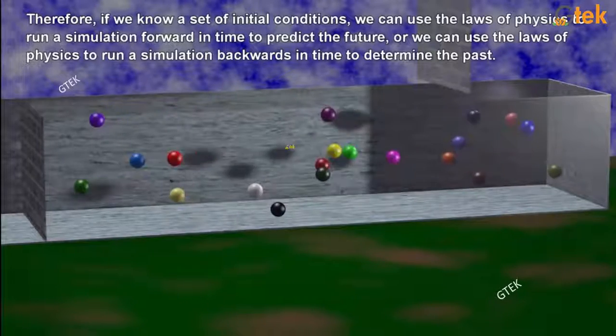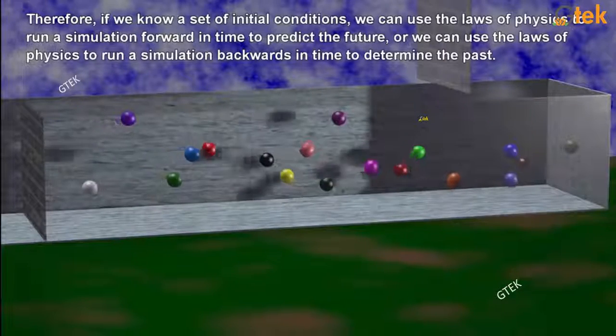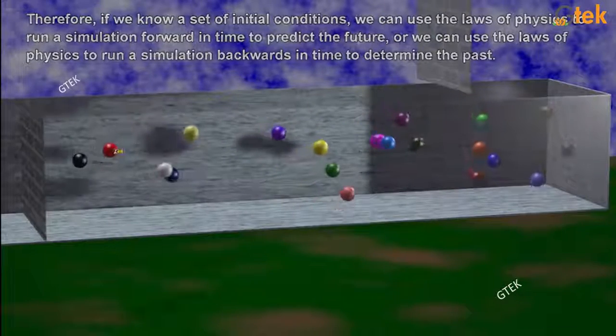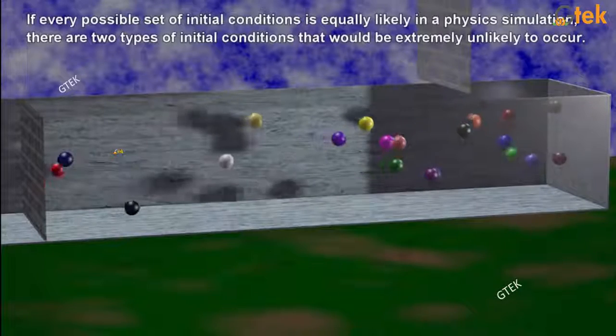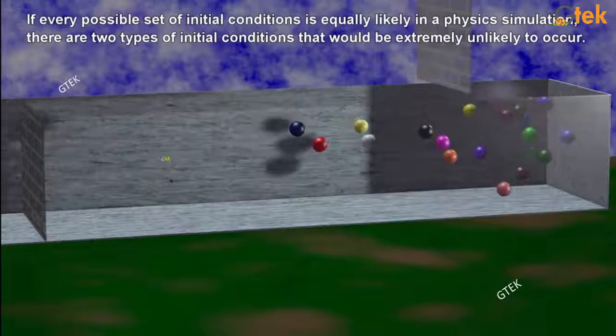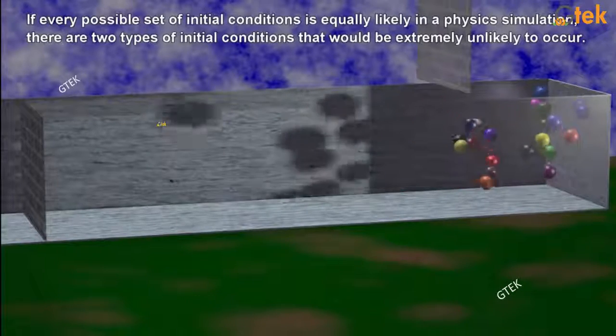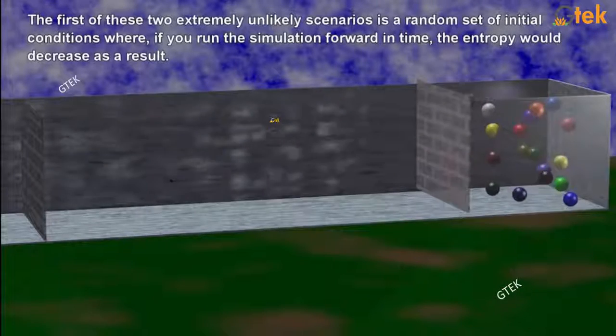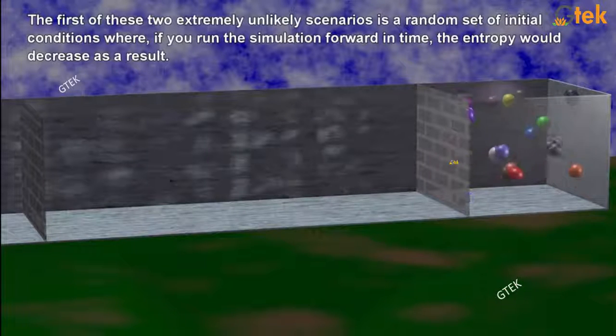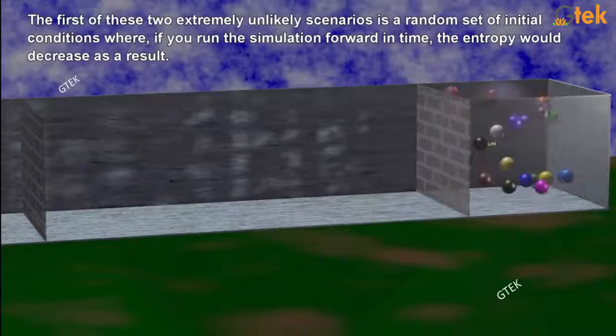Therefore, if we know a set of initial conditions, we can use the law of physics to run a simulation forward in time to predict the future, or we can use the law of physics to run a simulation backward in time to determine the past. If every possible set of initial conditions is equally likely in a physics simulation, there are two types of initial conditions that would be extremely unlikely. The first of these two extremely unlikely scenarios is a random set of initial conditions.